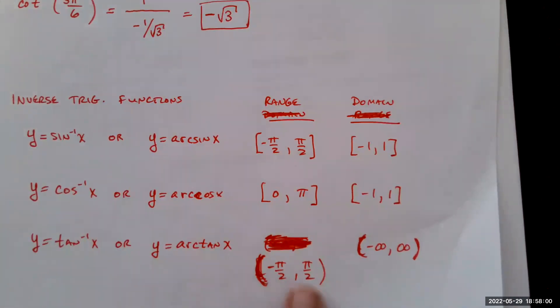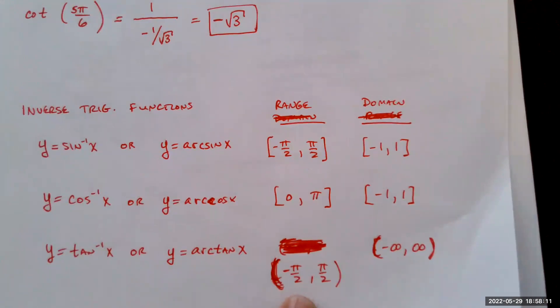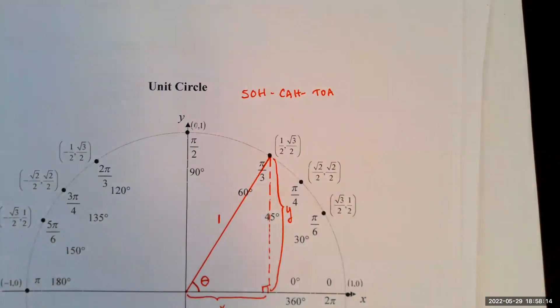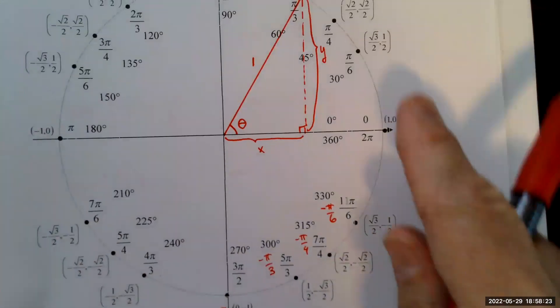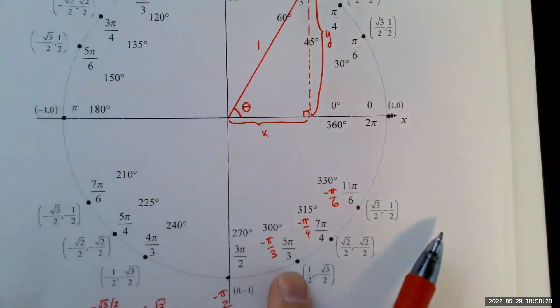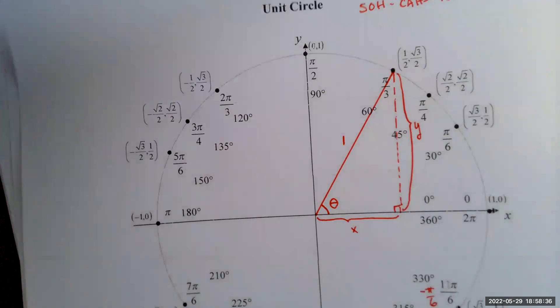We need values from negative π/2 up to positive π/2. Since tangent is negative, we're in the fourth quadrant as a negative angle. The y-coordinate is negative √2/2 and the x-coordinate is √2/2, so dividing sine by cosine gives negative 1. Therefore, tangent inverse of negative 1 equals negative π/4.